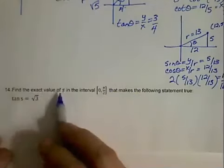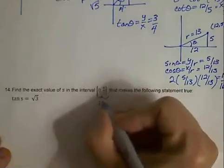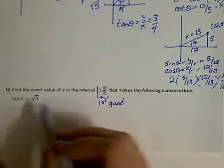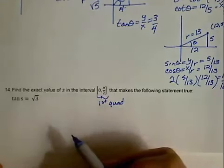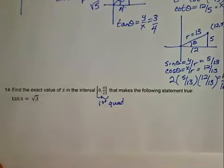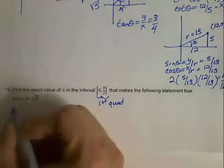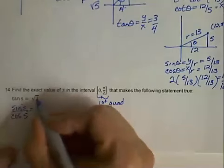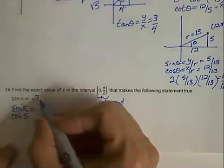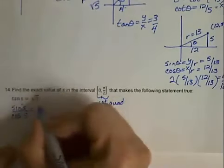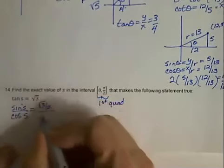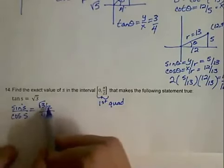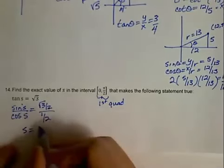In number 14, we're trying to find the exact value of s in the interval from 0 to pi over 2, which is the first quadrant, where the tangent of s equals the square root of 3. Since we want an exact value, we look at the unit circle — this will be a special angle. Tangent is sine over cosine, so we want sine of s over cosine of s to equal the square root of 3. Using the values square root of 3 over 2 for sine and 1 half for cosine gives the square root of 3, meaning s equals pi over 3.